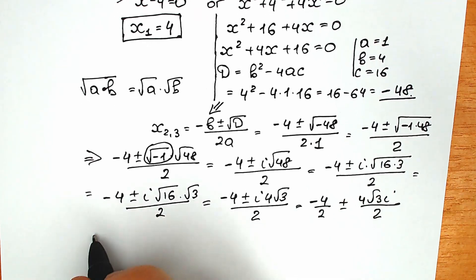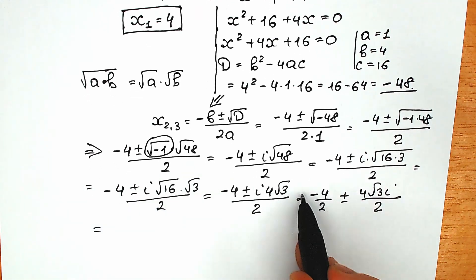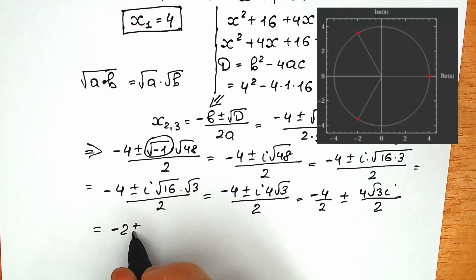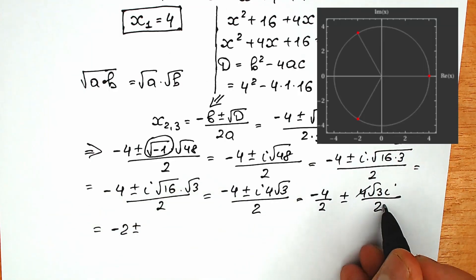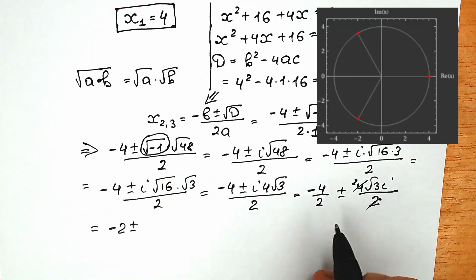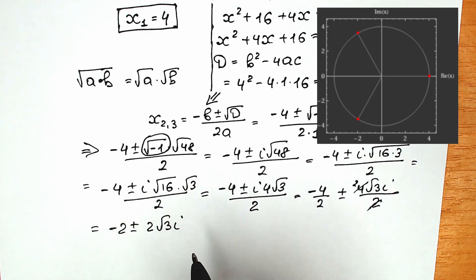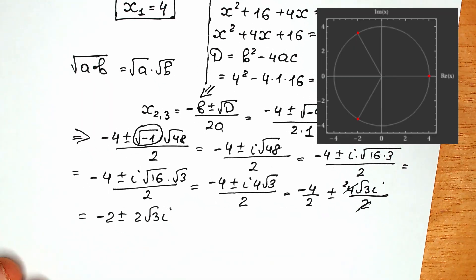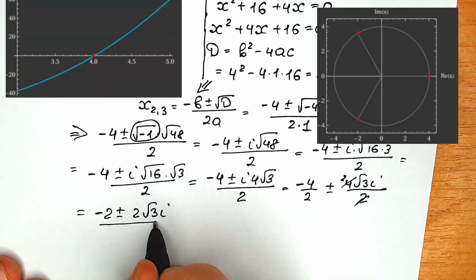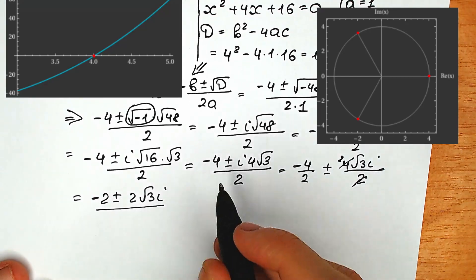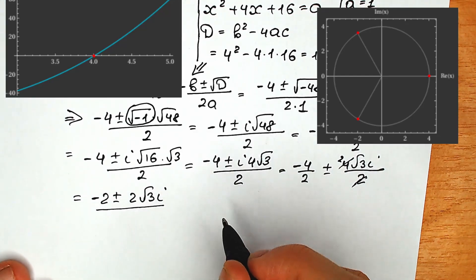Dividing through: minus 4 over 2 equals minus 2, and 4 divided by 2 gives 2 in our numerator. So we get minus 2 plus-or-minus 2i times square root of 3. We have two complex roots. Let's write our final answer — we found two complex roots and one real root.